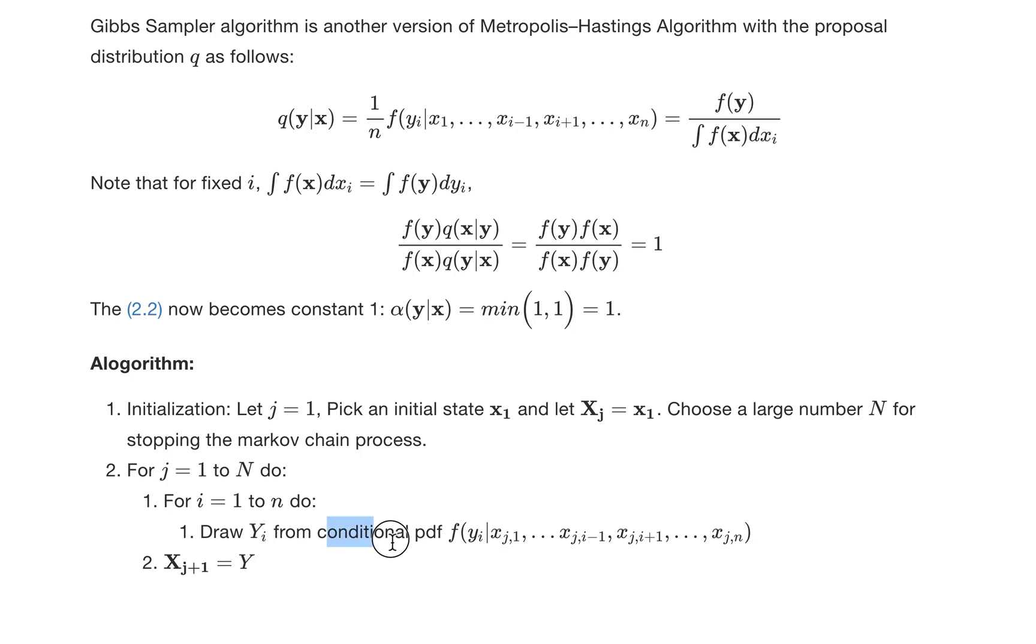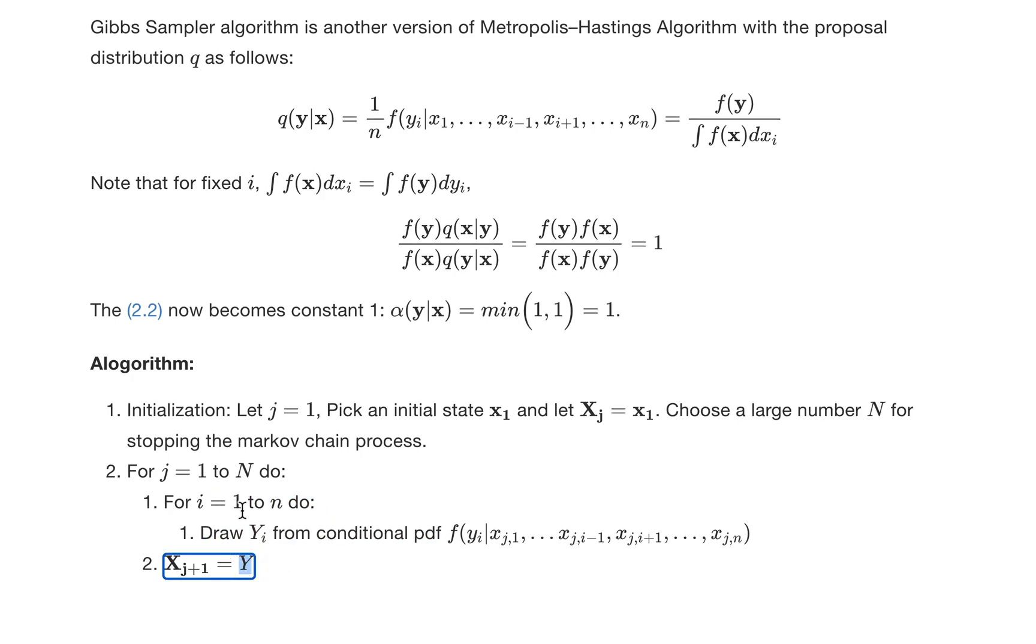Then we go through every i component, and then that new sample y, which is y1 to yn, will be our next sample in this Markov process. We go through m samples and pick the last one sample to be our sample for the underlying distribution we want to generate.